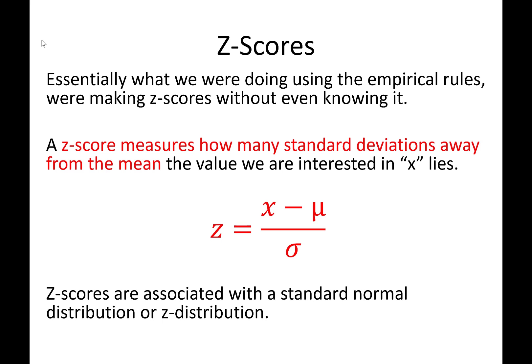And to calculate a z-score, what we do is we take the value we're interested in, compare it to the mean by looking at the subtraction of them, and then put that distance, put that difference in terms of standard deviations. And we'll see some examples of this.